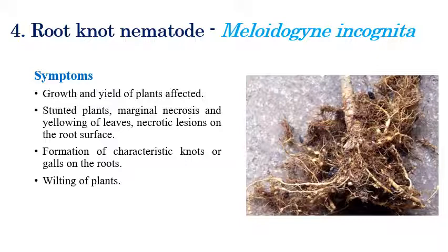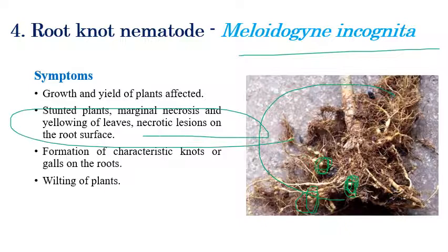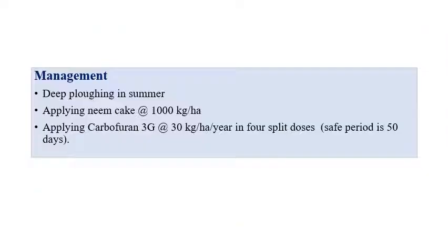The last one is root knot nematode, which is caused by Meloidogyne incognita. Coming to the symptoms, growth and yield can be affected by this disease. Mainly on root regions, knots or galls can be seen. Later, plants are stunted, and marginal necrosis, chlorosis, and yellowing of leaves can be observed due to the formation of knots at the root region. Yield of plants can also be greatly affected, and in later stages the plant slowly starts to wilt.